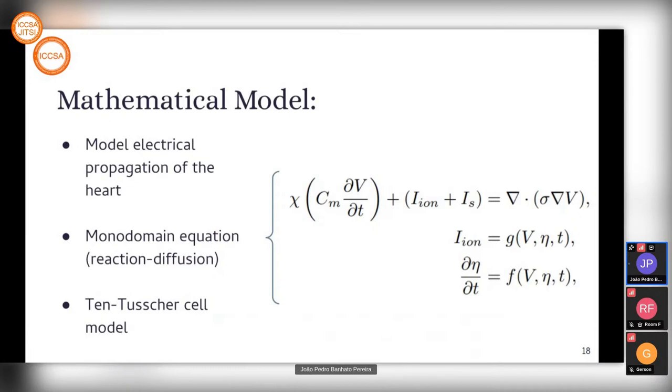It has to be coupled to a system of ordinary differential equations. We chose the Ten-Tusscher cell model to describe the action potential propagation in ventricular cells, which has 19 ordinary differential equations.